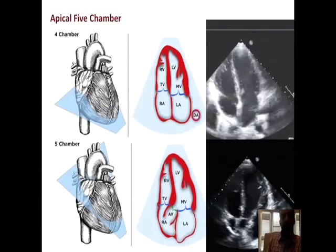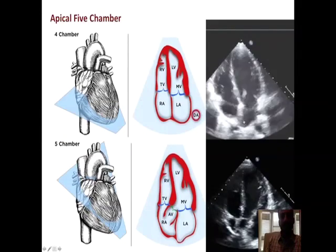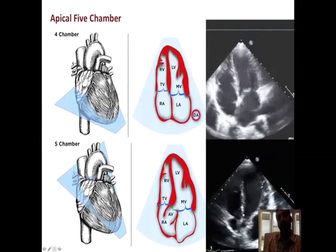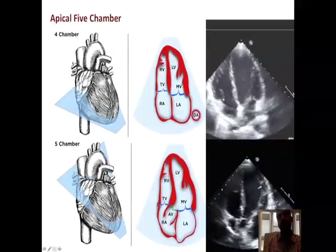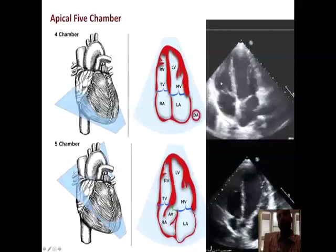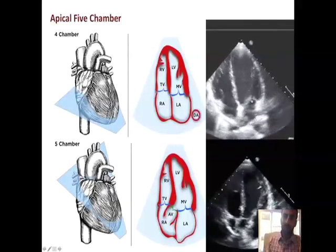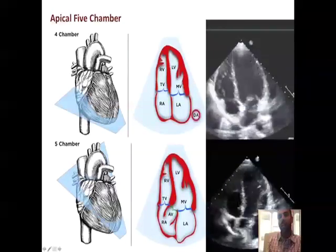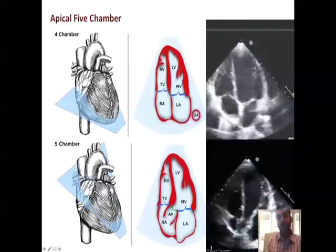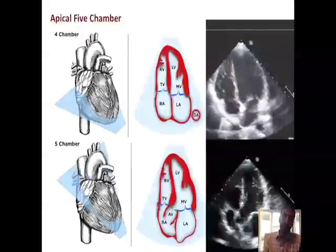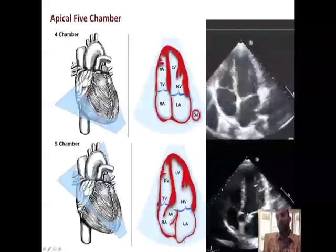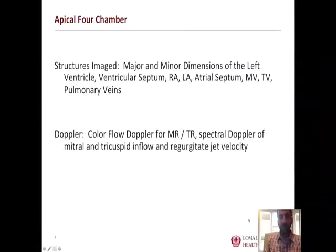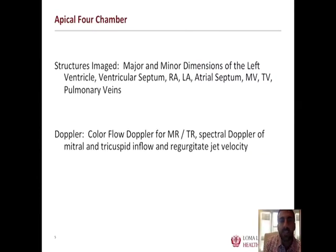The four-chamber view clearly identifies the tricuspid valve, right ventricle, left ventricle, and mitral valve. By having a more anterior cross section — lowering the angle of the ultrasound probe with the skin — you are able to insonate the left ventricular outflow tract and the aortic valve. This is the anatomy we assess for the apical four-chamber view.